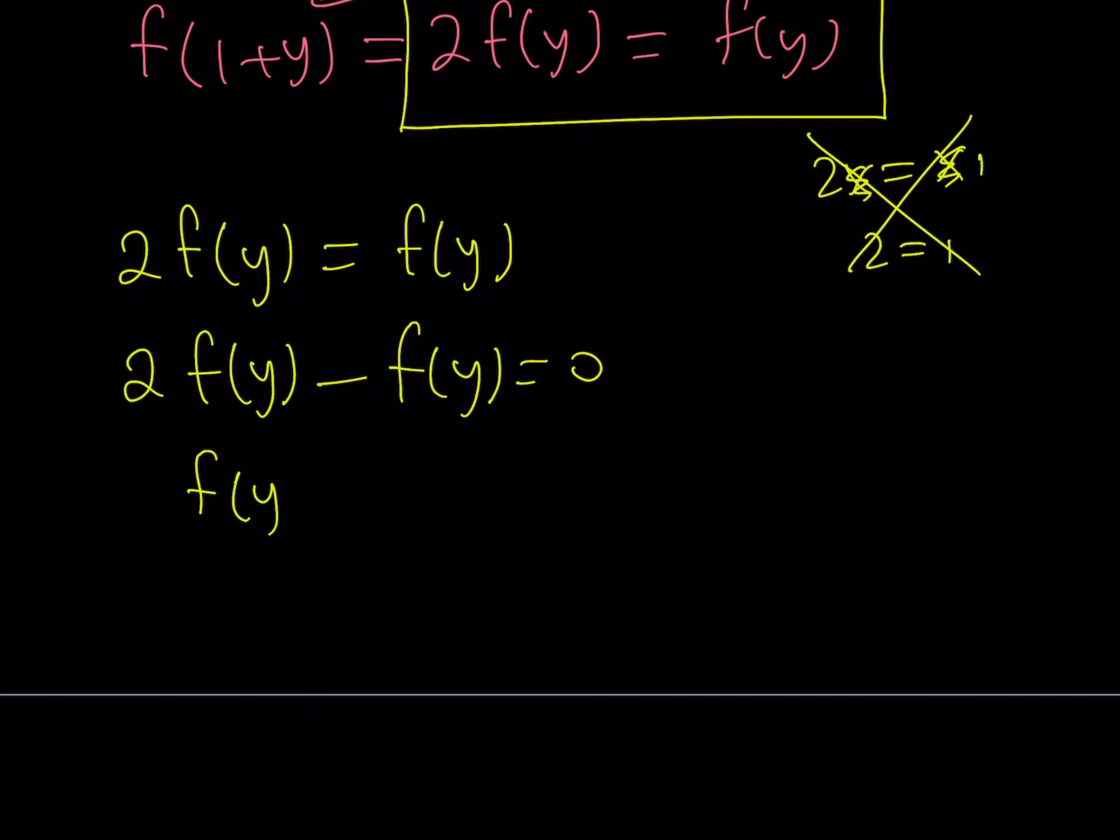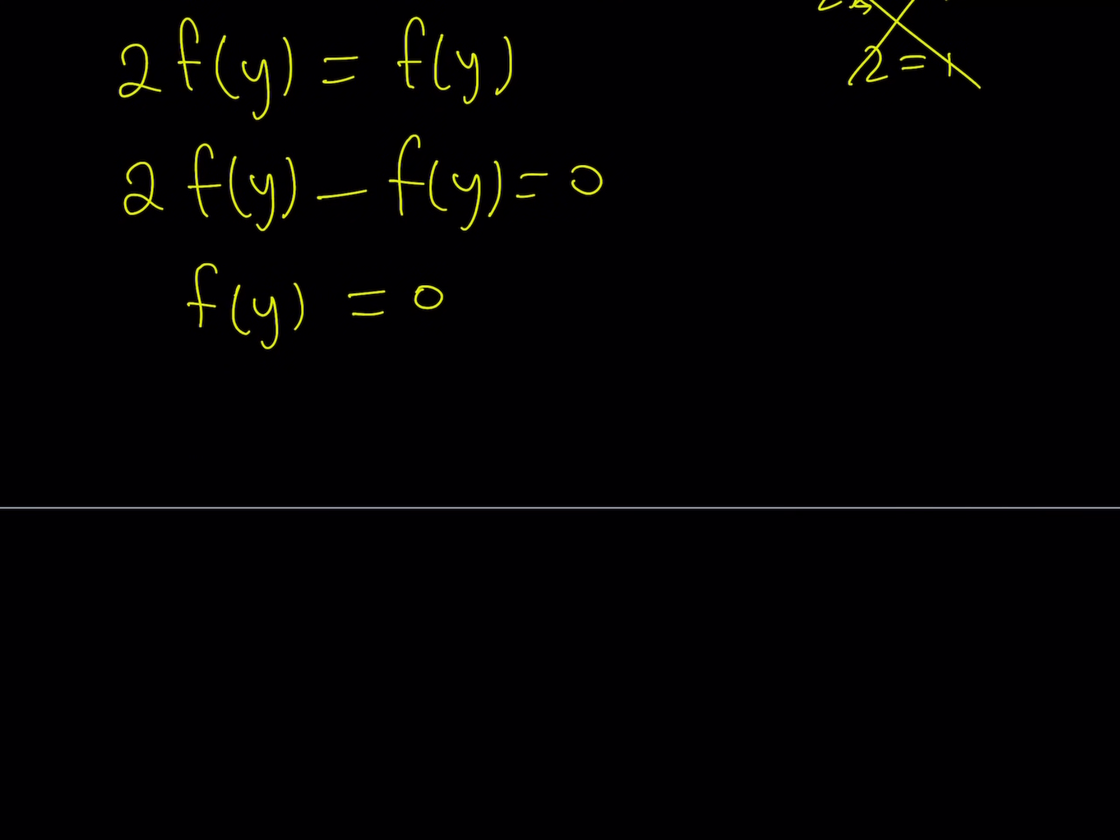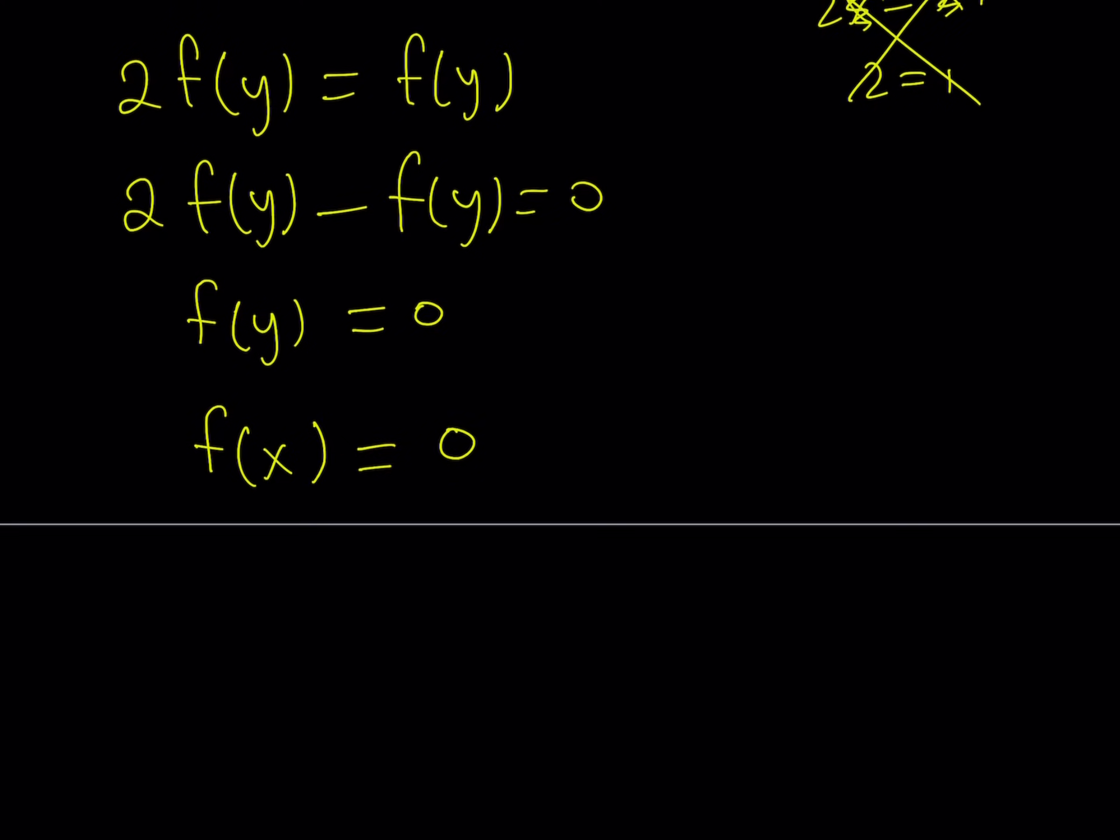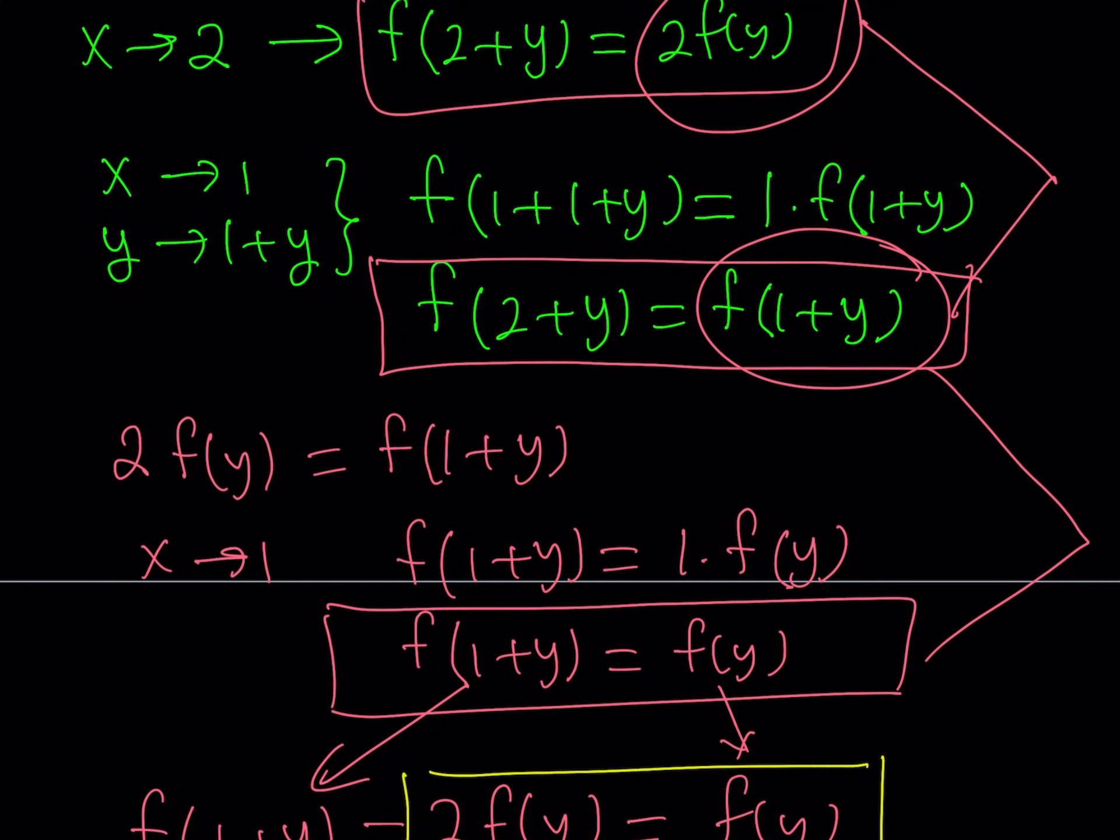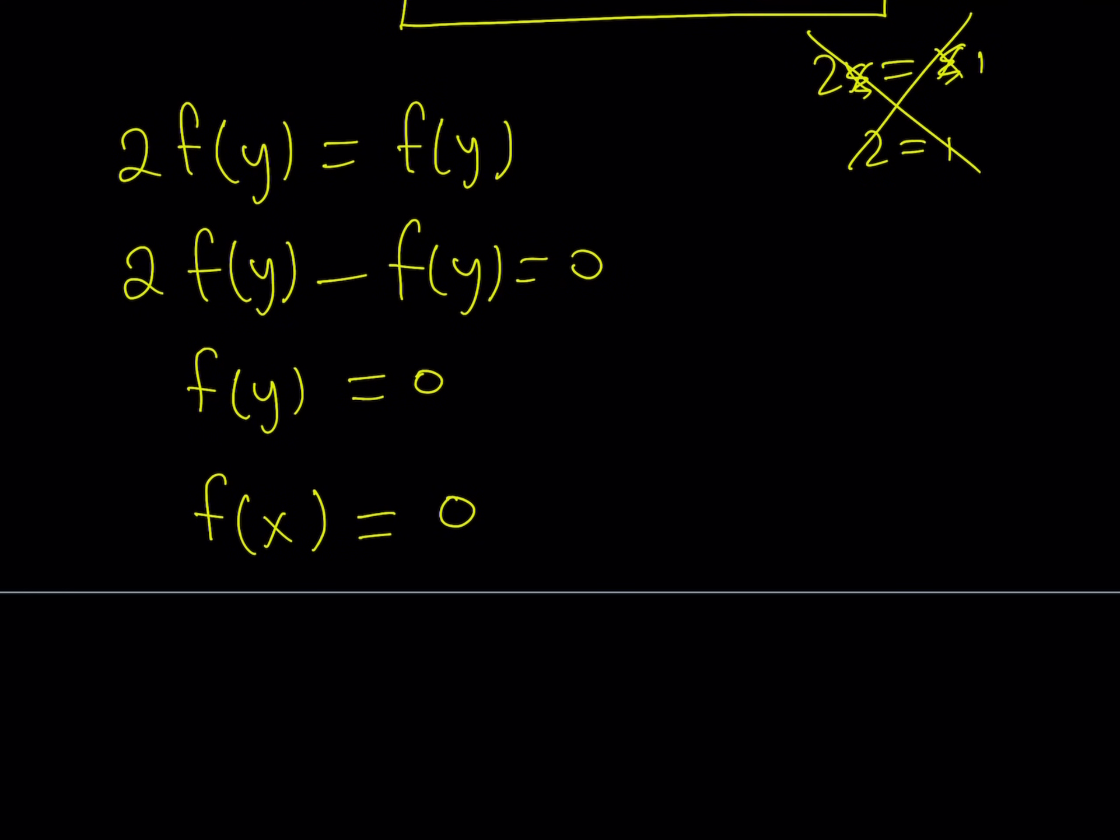So from here we get f of y is equal to 0. Now, what is that supposed to mean? Like when we find something like f of 0 equals 0, that is a particular point. But here we are getting that in the general sense. So, if you replace y with x, since this is a function and I can do that, f of x is equal to 0. So, basically our function is the 0 function, the function that satisfies the original equation, which was given as f of x plus y equals, let me rewrite the original one, x times f of y is the 0 function.